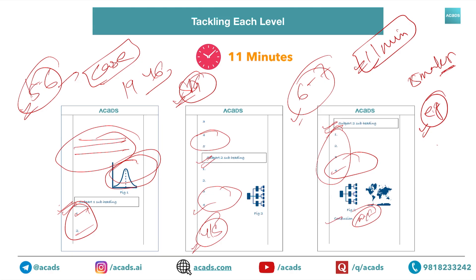To summarize the hierarchy of UPSC marks: number one priority is completing your paper in three hours; number two is 70 subparts; number three is 350 points; and finally 120 substantiation points. If you follow this framework, you will definitely be scoring around 460 to 480 in the GS paper. Thank you.